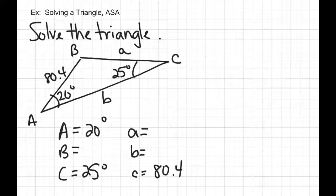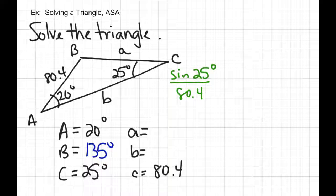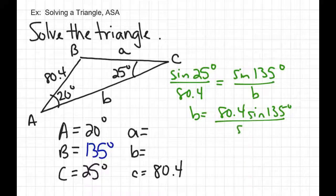We have to determine what to find first. Anytime you're given two of the three angles in a triangle, find the third one. So angle B is 180 minus 20 minus 25, which is 135 degrees. Now that we know angle B, we can find side b using the Law of Sines. The sine of 25 degrees over 80.4 equals the sine of 135 degrees over b. Cross-multiplying, side b is 80.4 times sine of 135 divided by sine of 25 degrees, which gives approximately 134.5.